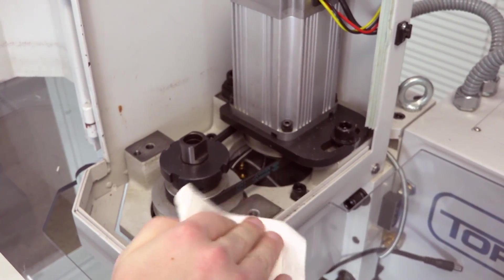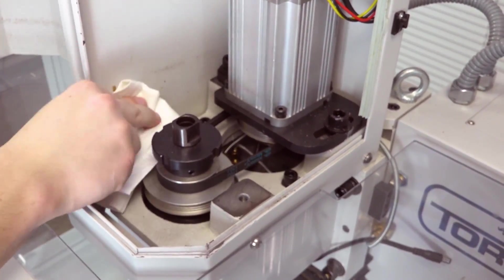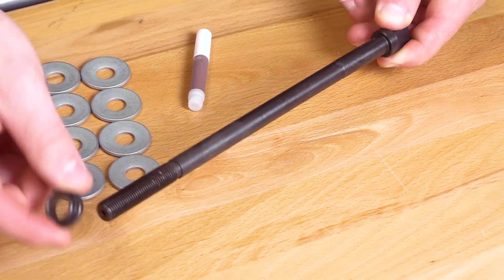Using a clean cloth, wipe down the exposed surfaces inside the spindle motor cabinet. Remove the drawbar bushings and set aside.